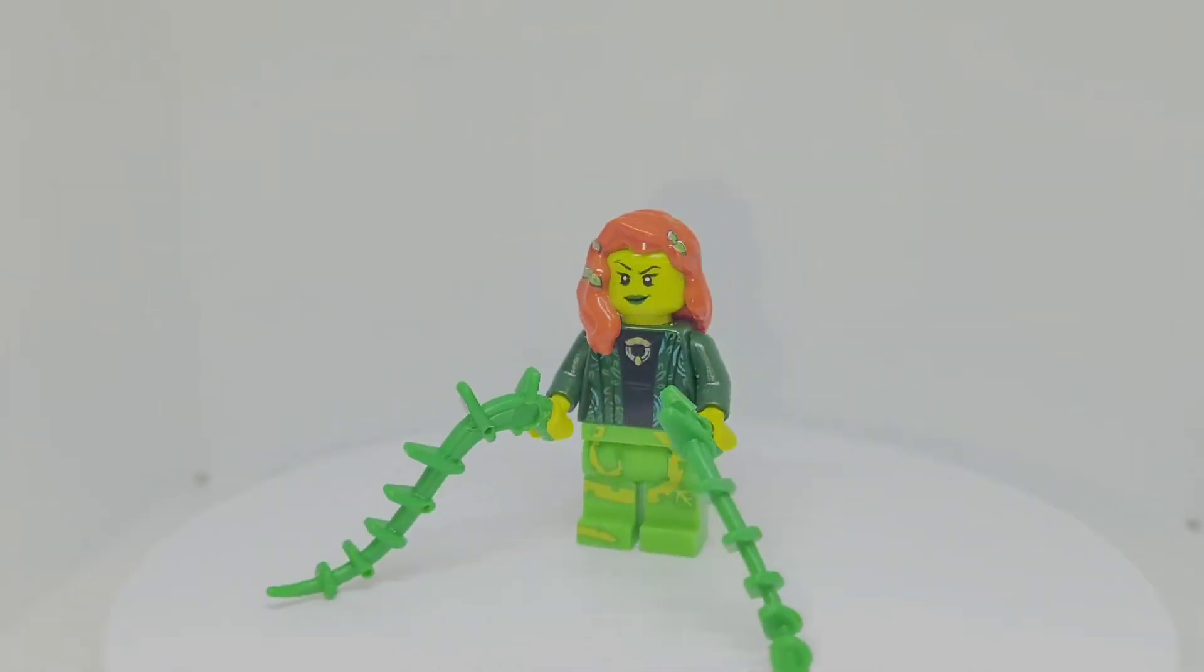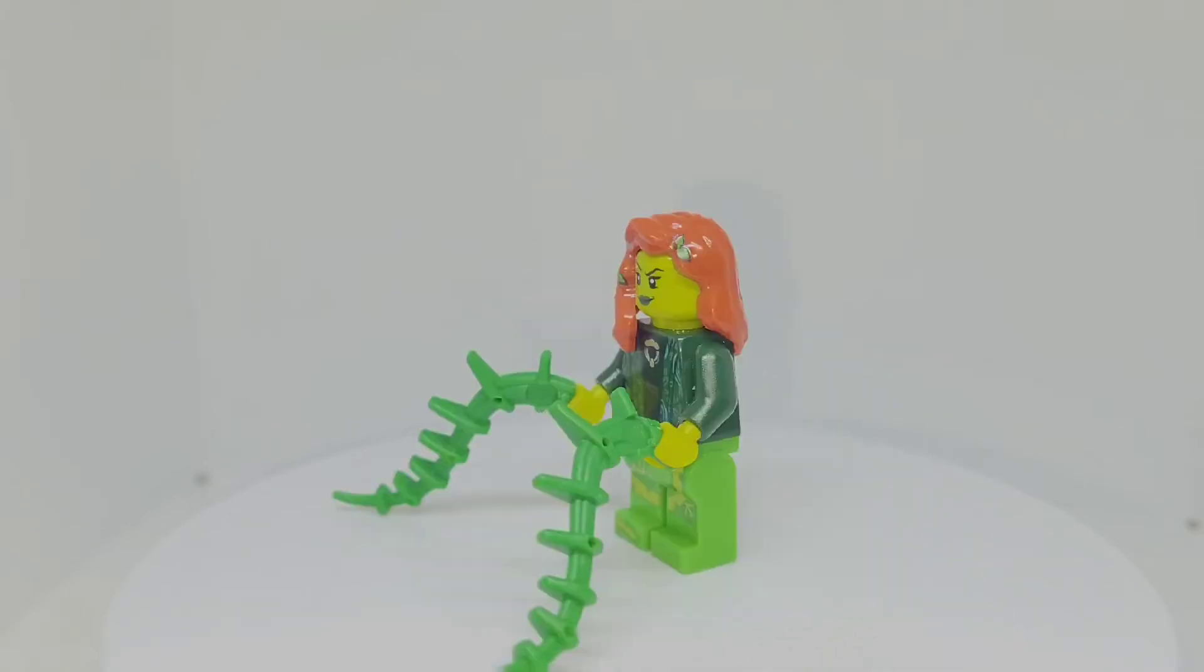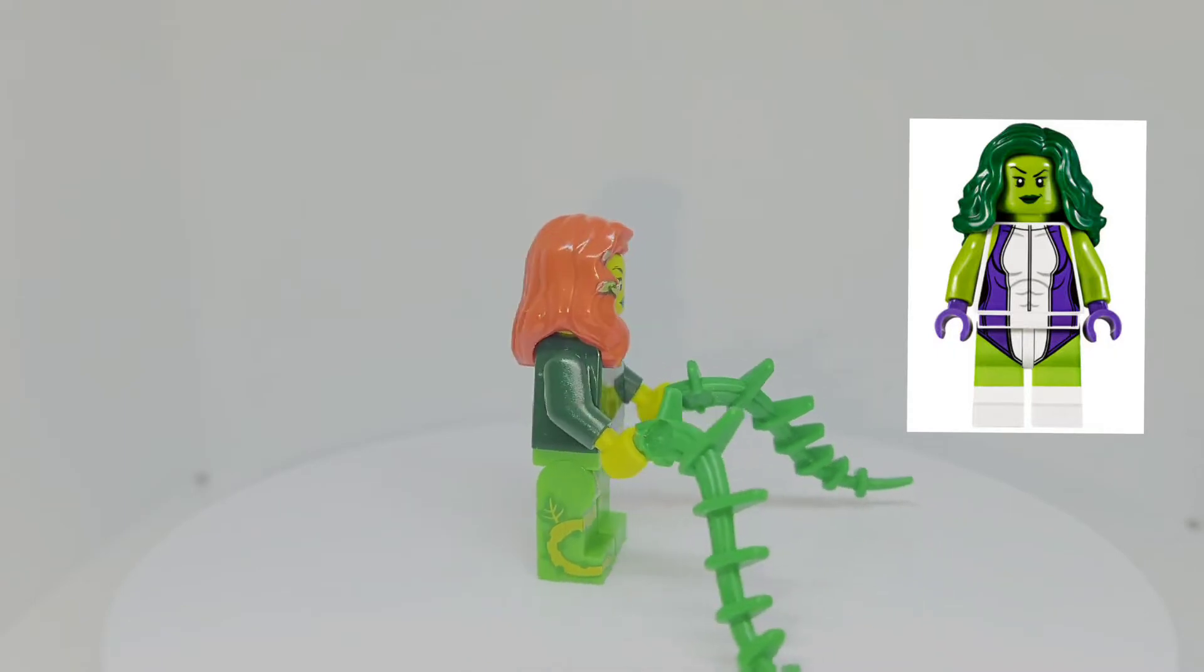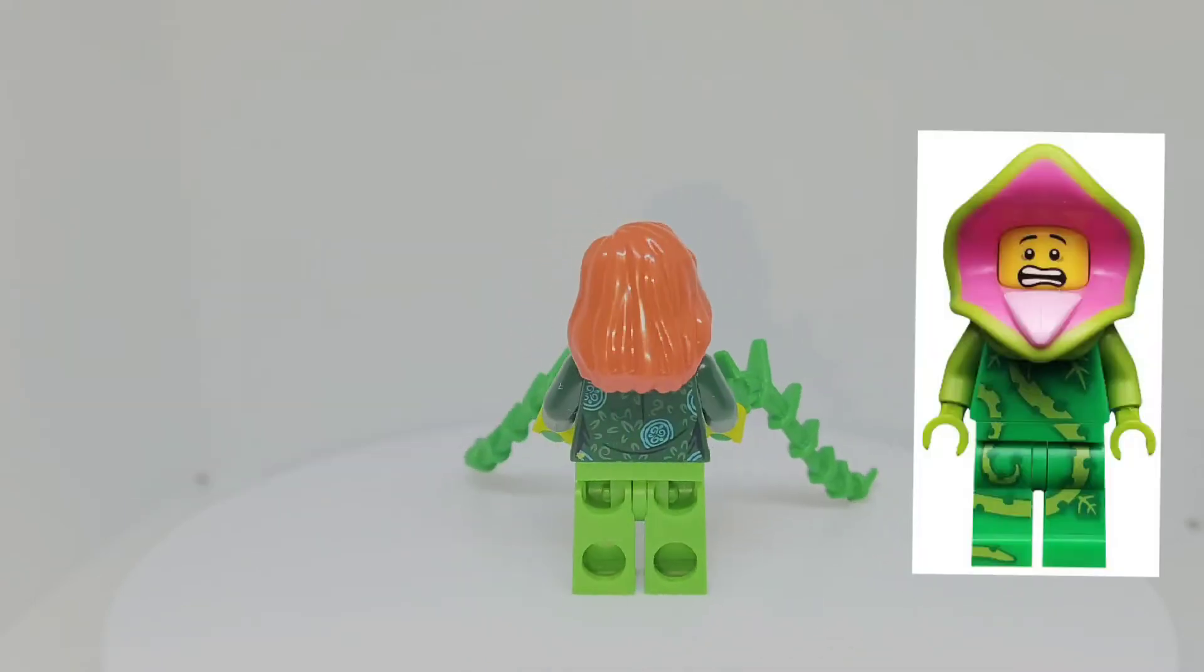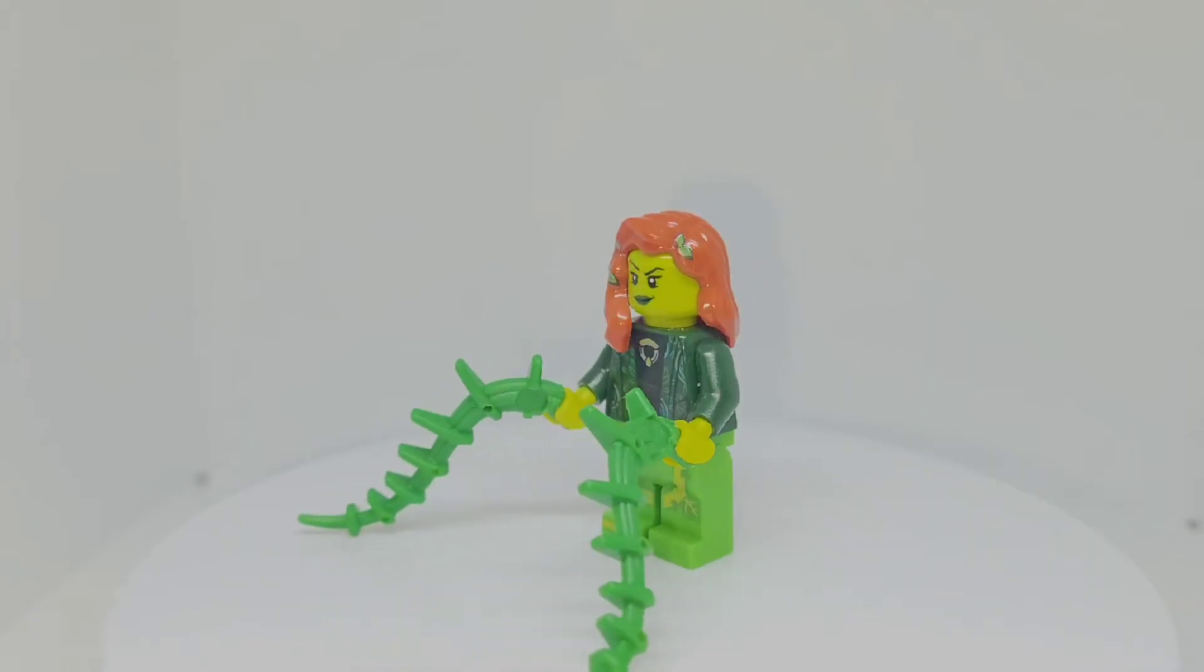The next figure we got is Poison Ivy, who has to be one of my two favorites from this video. Tell me below which one you like the most after I show them all. Ivy uses the 2012 Poison Ivy hairpiece, the 2016 She-Hulk face, a dark green professor torso from Harry Potter, the Series 14 Plant Monster costume legs, lime green hands, and two green plant vines.